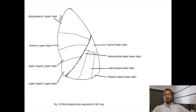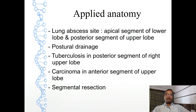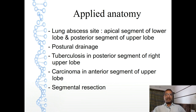Applied anatomy of bronchopulmonary segments of lung. Lung abscess formation: the right principal bronchus is more vertical with a wider lumen, therefore a foreign body can be easily aspirated into right bronchus and right lung. Lung abscess is common in the apical segment of the lower lobe and posterior segment of the upper lobe.